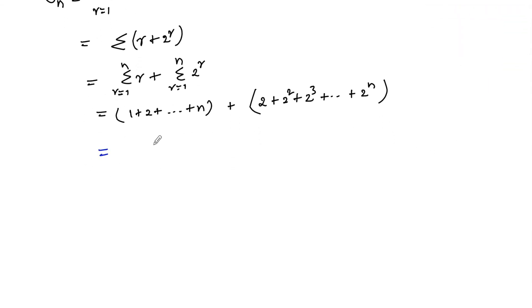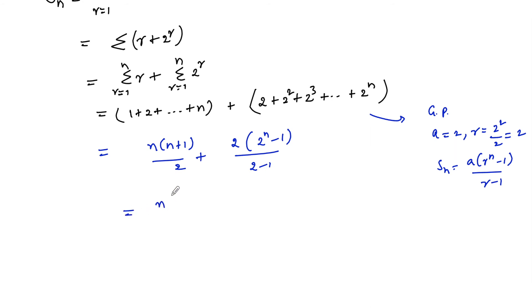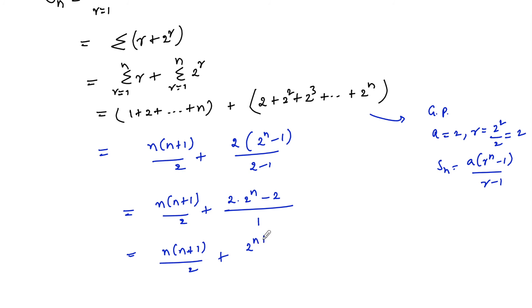The first sum — sum of first n natural numbers — uses the formula n(n+1)/2. The second series is a GP where the first term is 2 and common ratio is 2. Using the GP sum formula a(r^n - 1)/(r - 1), we get 2(2^n - 1)/(2 - 1). Combining both parts, the final answer is n(n+1)/2 plus 2^(n+1) minus 2.